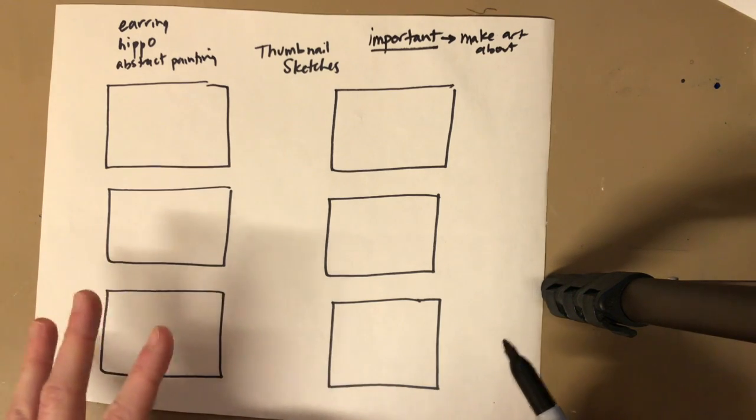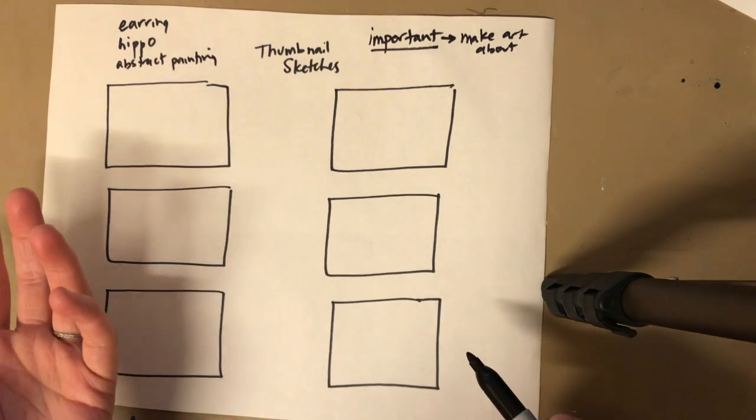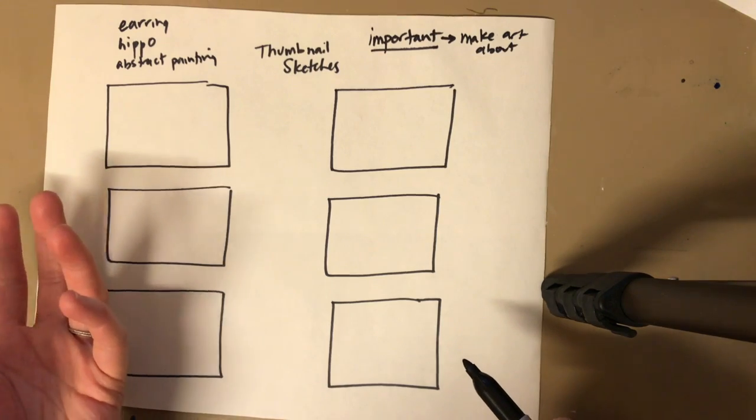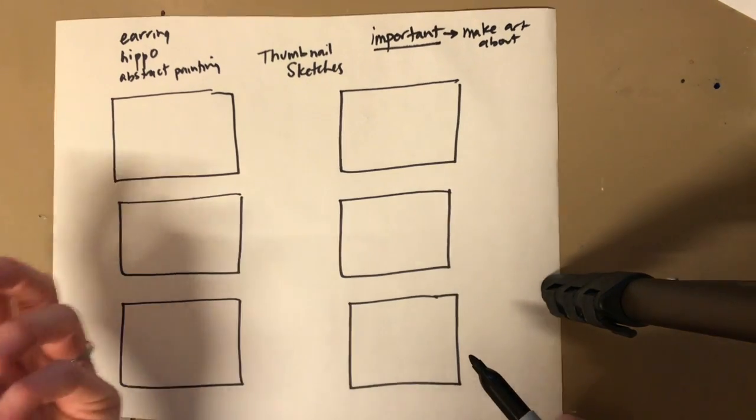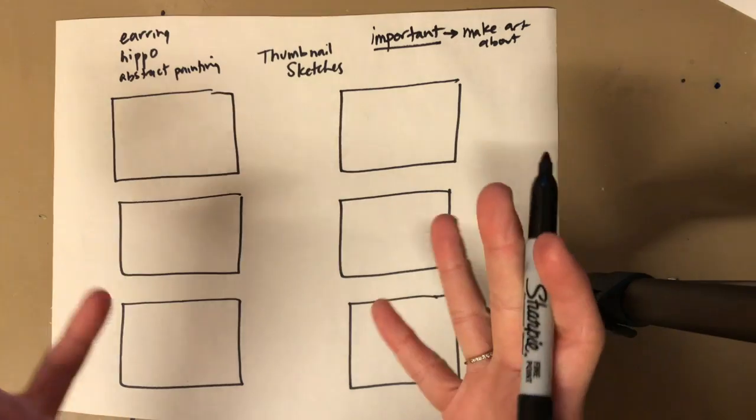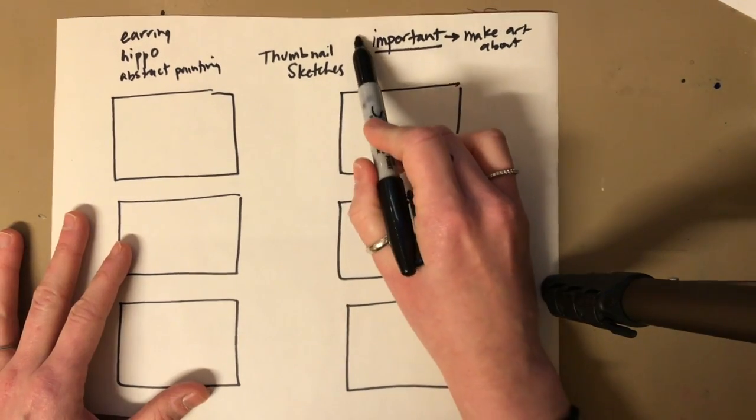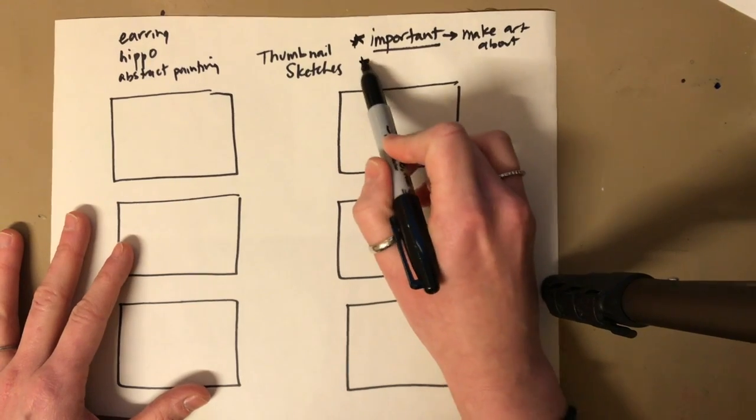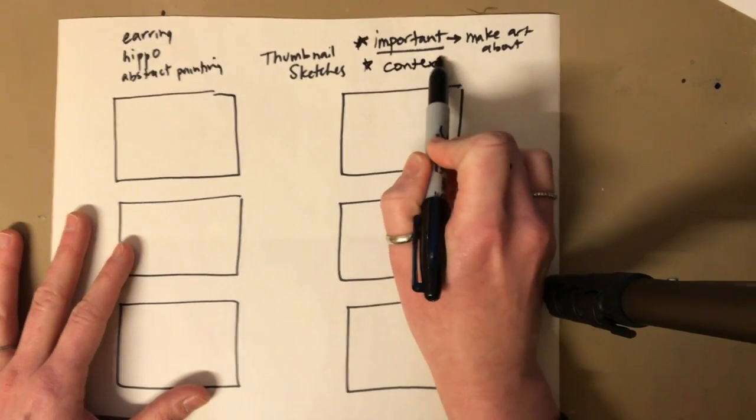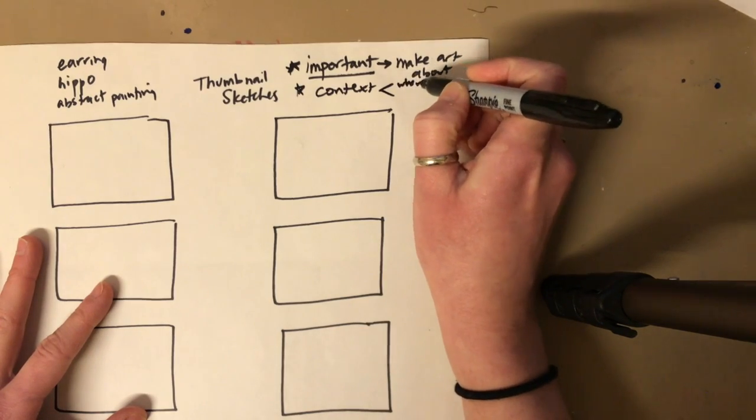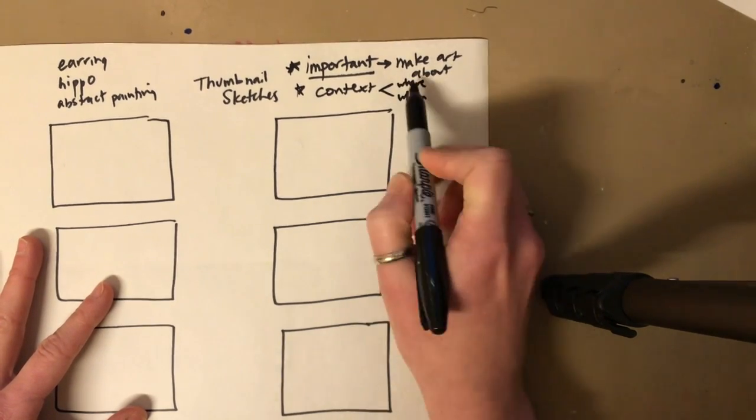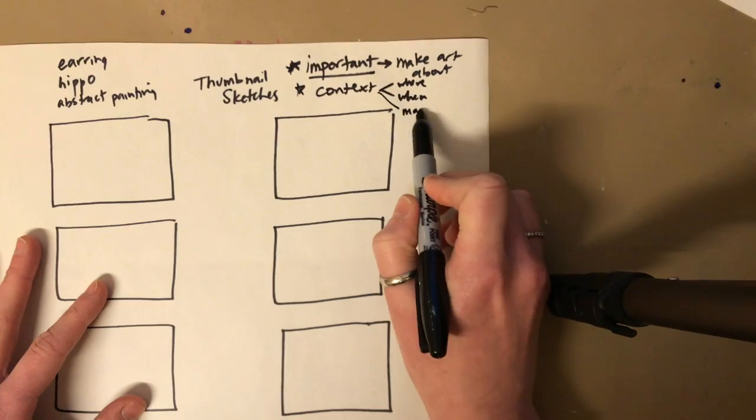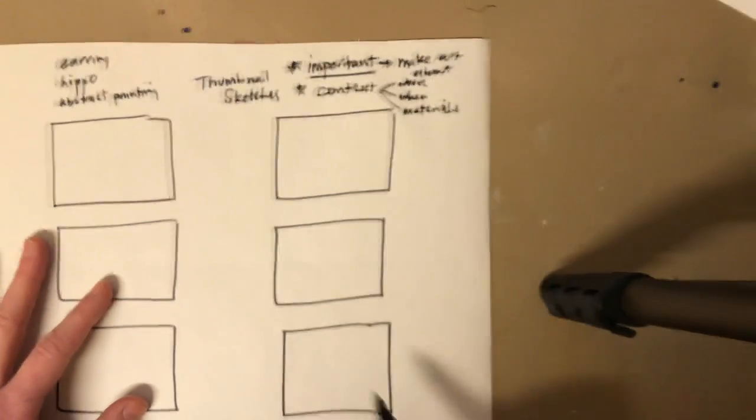If you were around before people could melt metal and make things out of metal you can't use metal as a material. So what things are important to your culture and then think about the context. Where, when, what kinds of materials are at your disposal, those kinds of things.